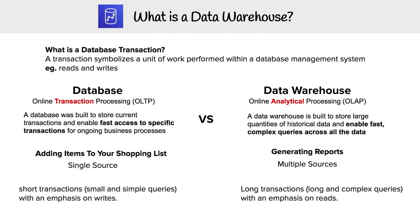On the data warehouse side, it runs on an online analytical processing system — OLAP. OLAP is all about long and complex SQL queries with an emphasis on reads. A data warehouse is built to store large quantities of historical data and enable fast, complex queries across all data. The utility here is business intelligence tools and generating reports. A data warehouse takes data from multiple sources — DynamoDB, EMR, S3, Postgres — all coming into one place so we can run complex queries.